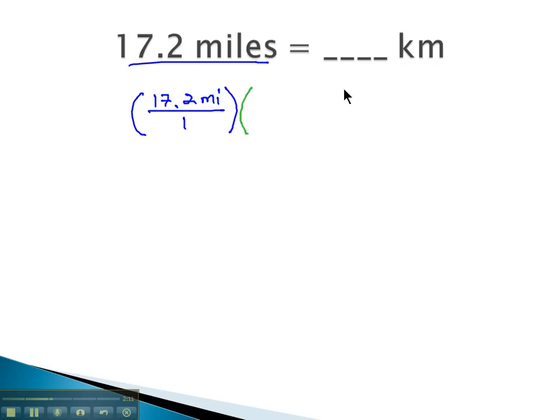Next, we'll set up our conversion factor. Remember, in the conversion factor, we placed the units in the opposite part of the fraction. Miles are on top, we put miles on the bottom, and we're gonna convert them into kilometers. We'll have to look up what the conversion factor is between miles and kilometers, and we'll find that 1.61 kilometers is the same as 1 mile.